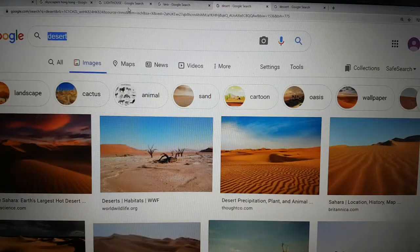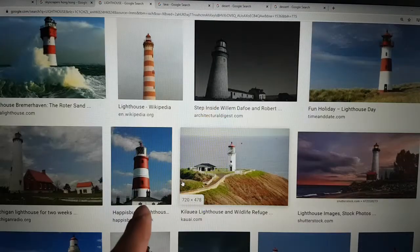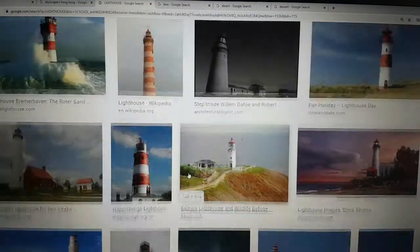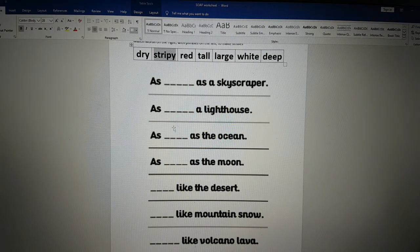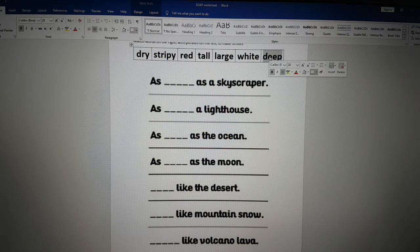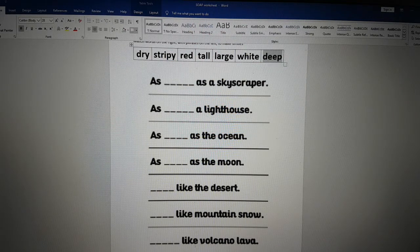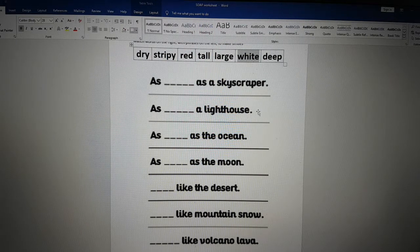Look at our picture of lighthouse. Can you see here? Lighthouses are very stripy. As deep as the ocean. As what as the moon? The moon is white, of course. As white as the moon.